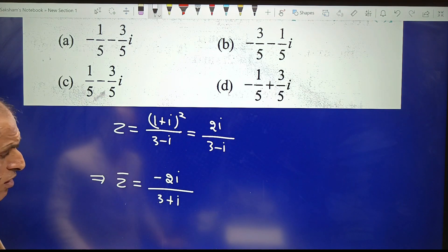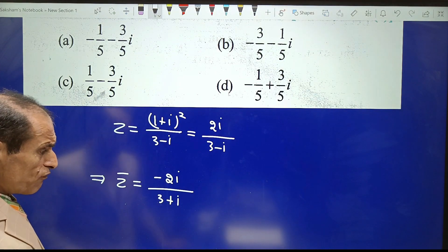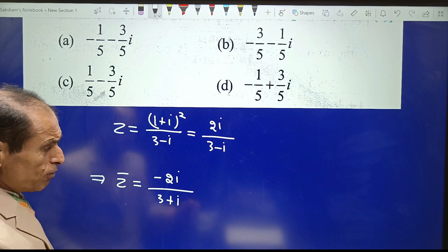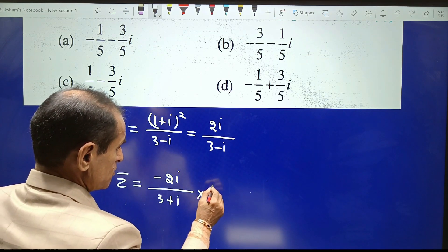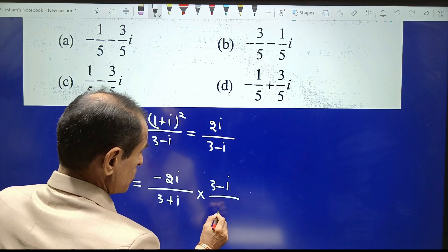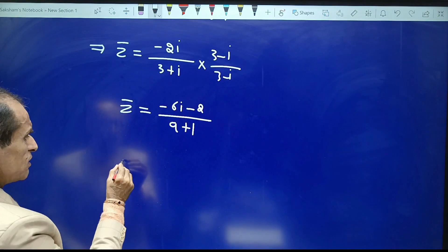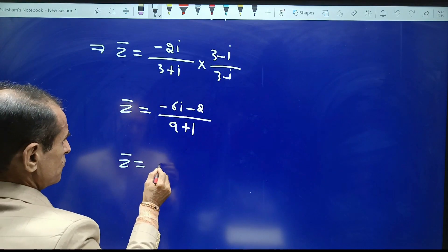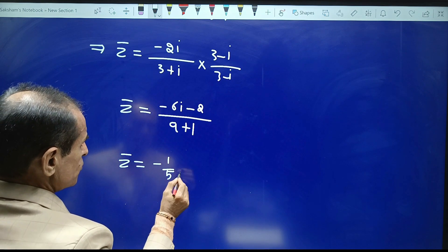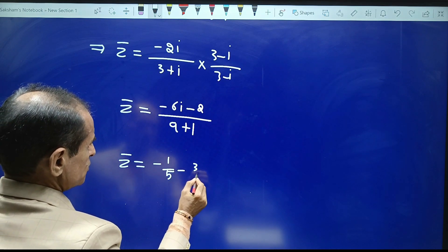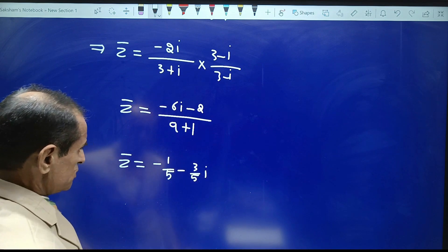Hence, we will simplify it by multiplying and dividing by 3-i. That is, Z̄ = -1/5 - 3i/5.